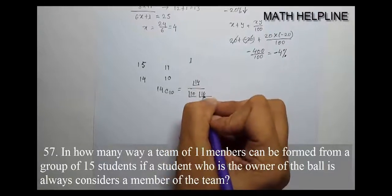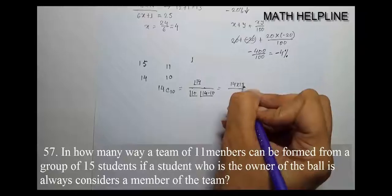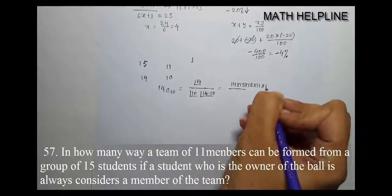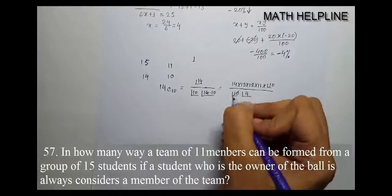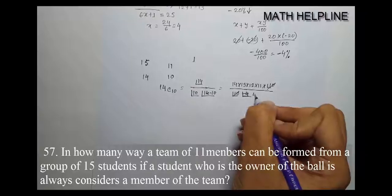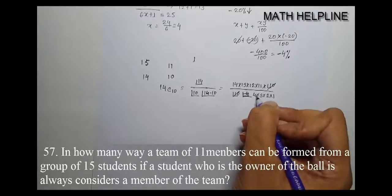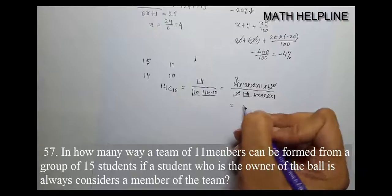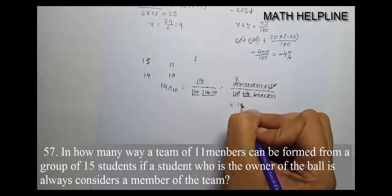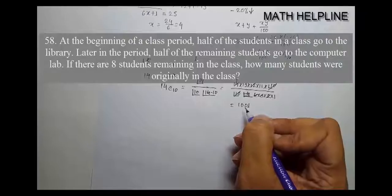We'll use the factorial formula. This becomes 14C10, which equals 14 factorial divided by 10 factorial times 4 factorial. That's 14 times 13 times 12 times 11 divided by 4 times 3 times 2 times 1, which equals 1001. The answer is 1001.